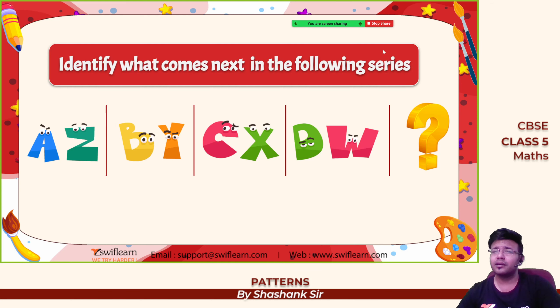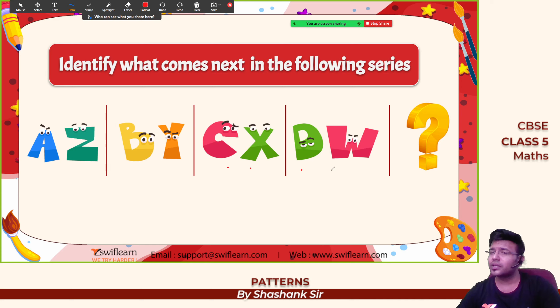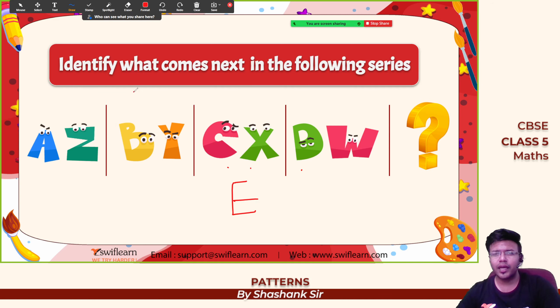A to Z: first letter and last letter, second and second last, third and third last, fourth and fourth last, fifth letter — so E and the fifth letter from the last, which is V. So E and V is the pattern.